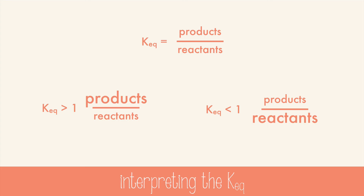Additionally, equilibrium constants do not have a standard SI unit. Because it's a measure of concentration ratios, the unit may not even exist. For the purposes of high school-level calculations in chemistry, we will omit the units of equilibrium constants.